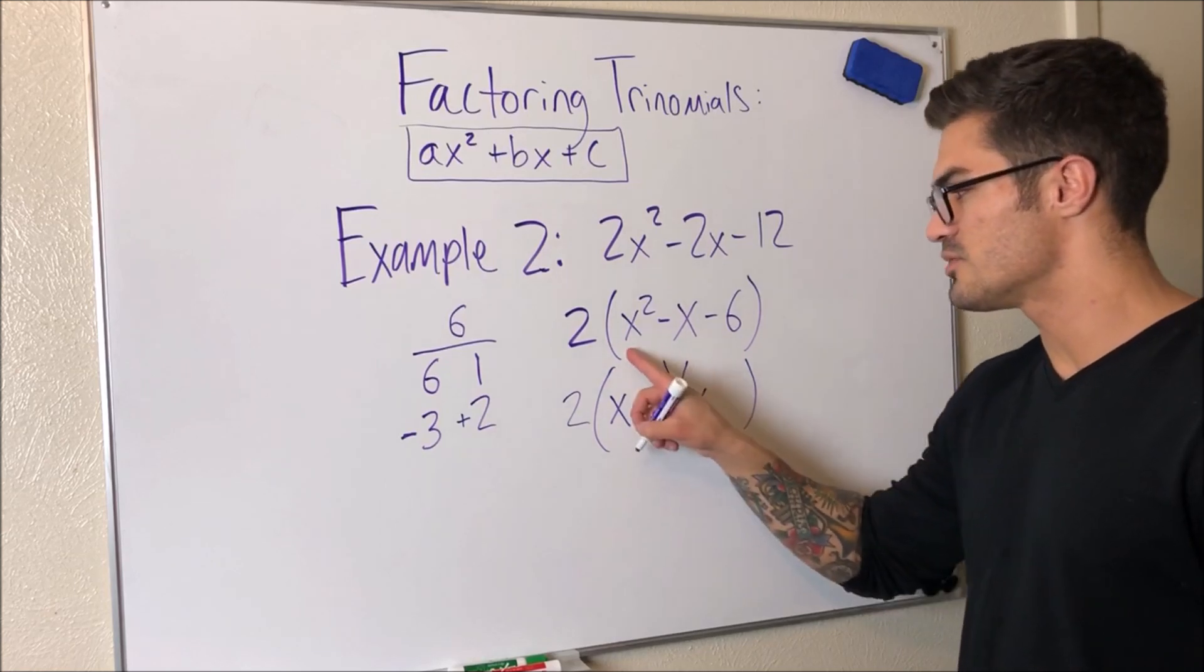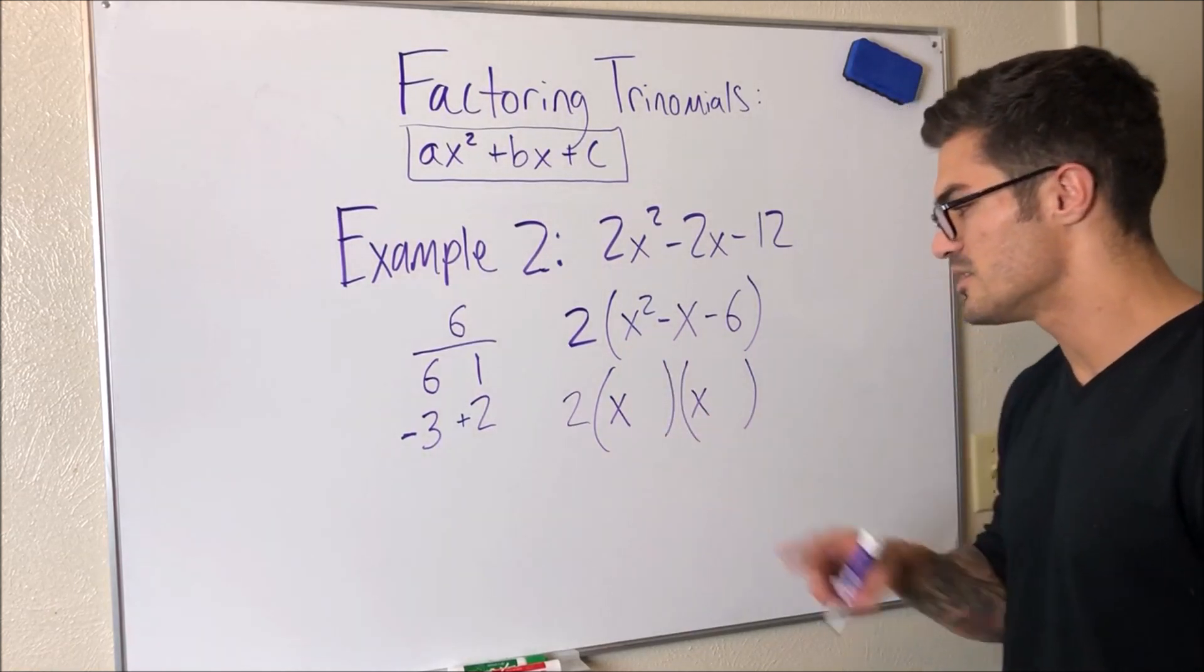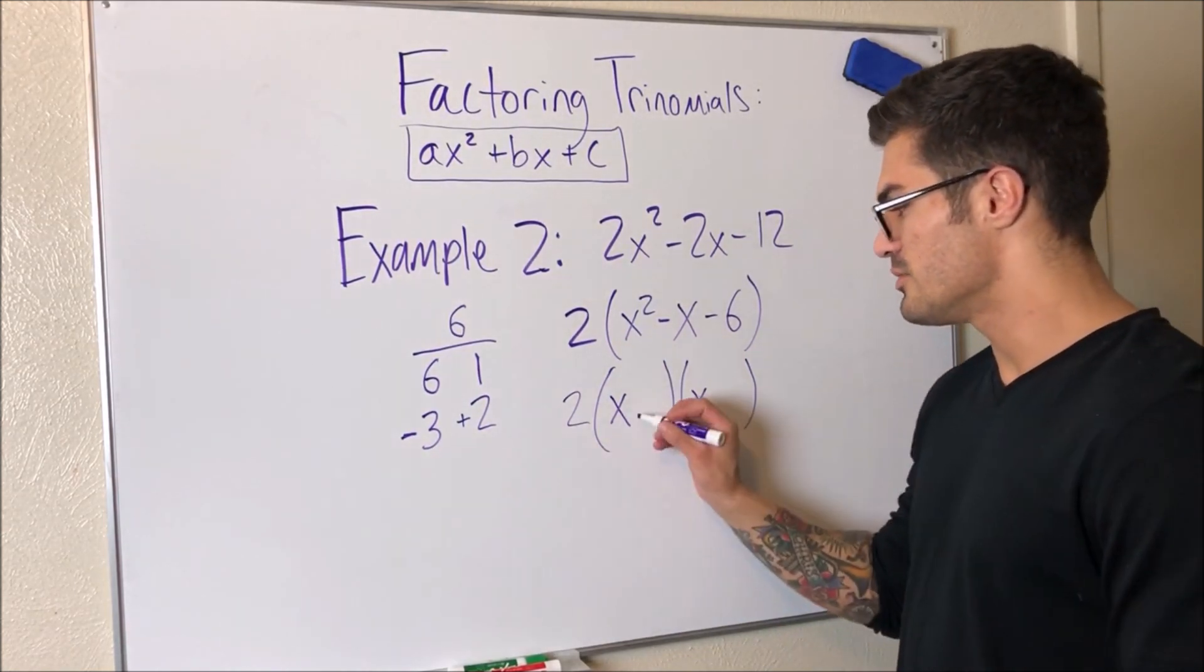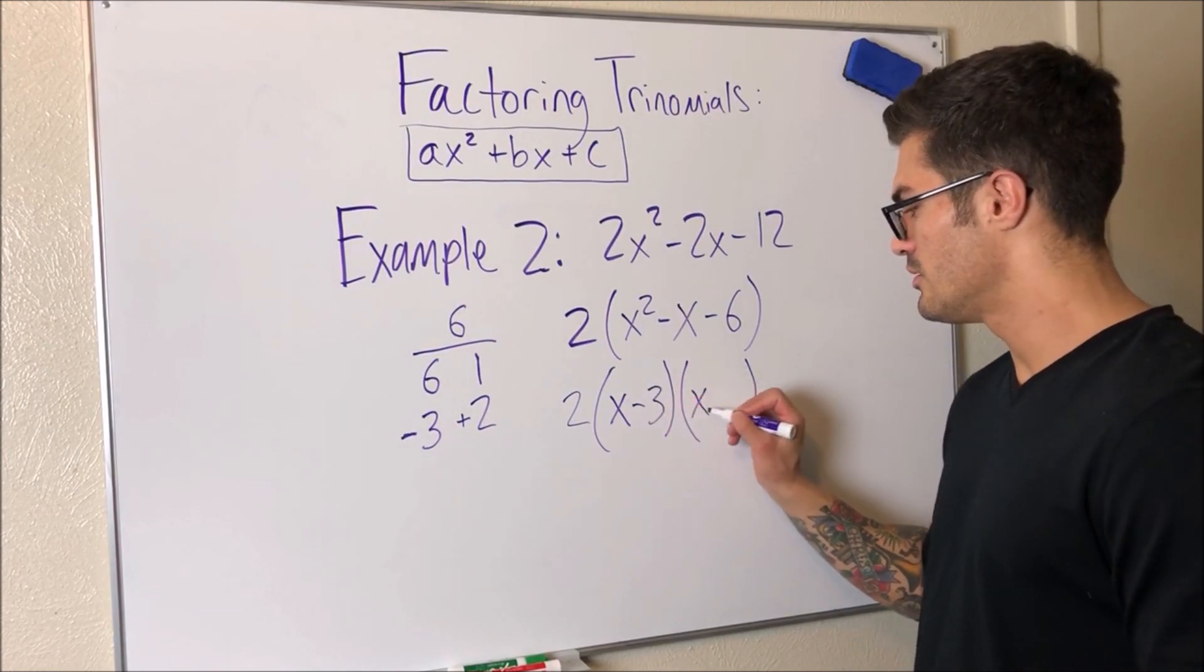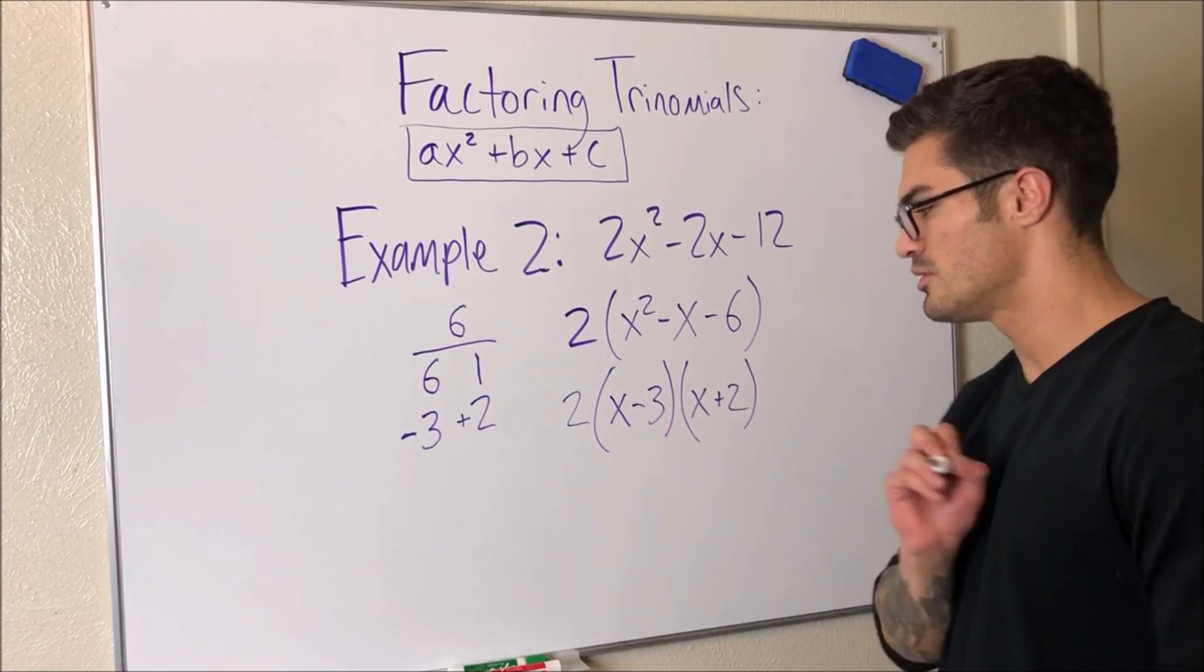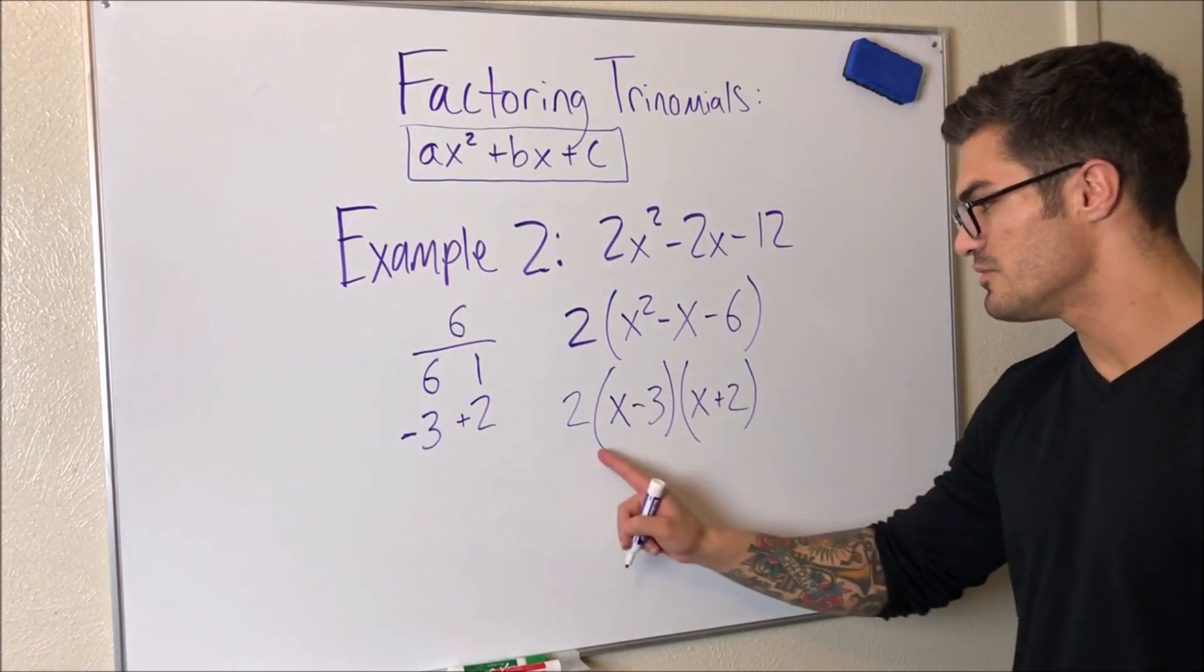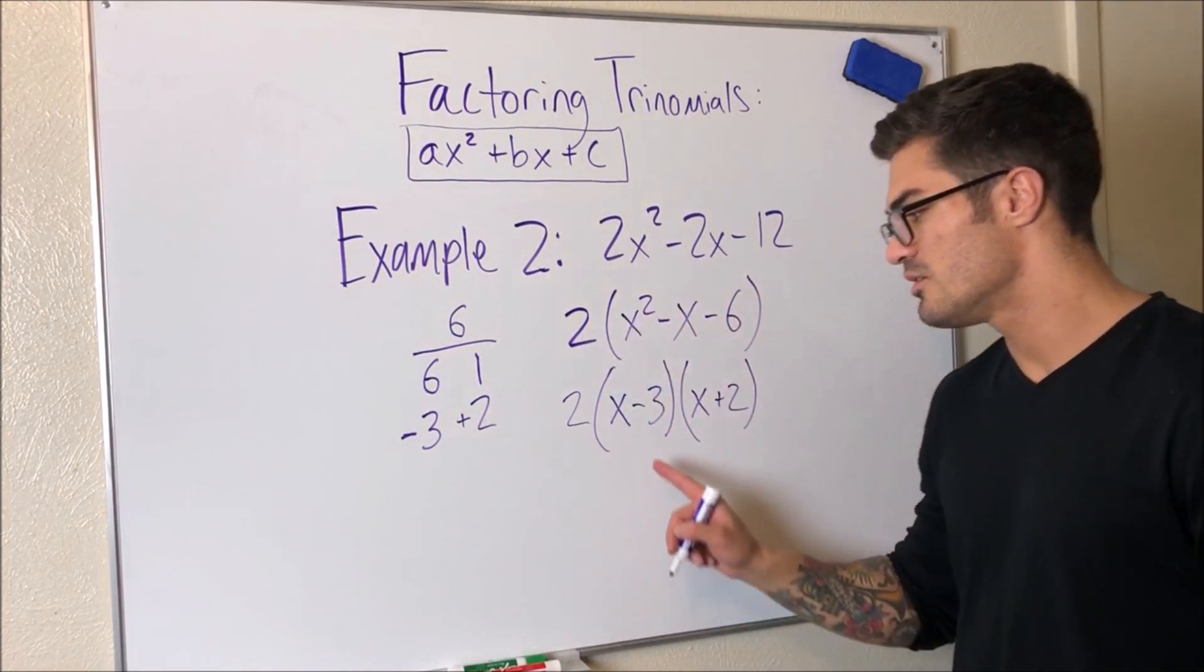So I have X's here, as always when A is one you can just go ahead and write X's here. And then it's going to be minus three plus two. Pretty straightforward. And that is the fully factored version of this.